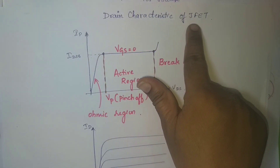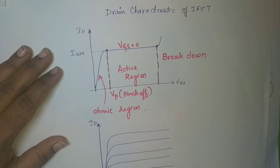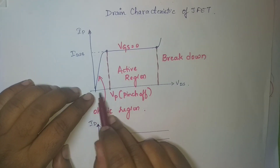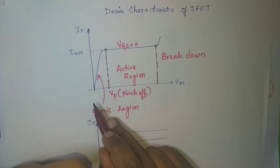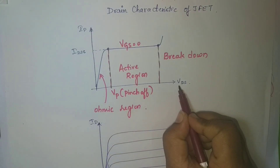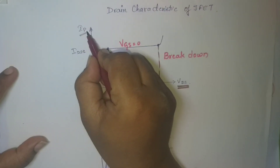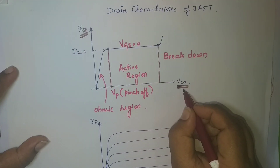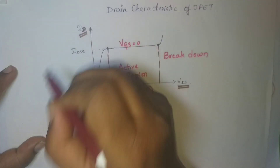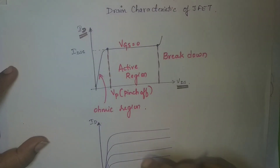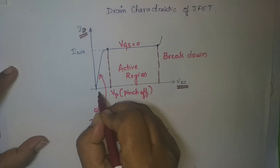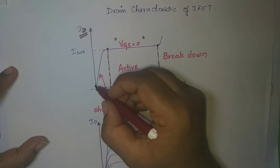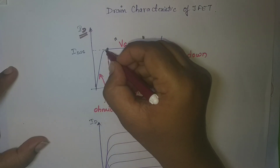The next topic is drain characteristic of JFET — how it looks and what its parameters are. You have two axes: the x-axis shows voltage VDS, and the y-axis shows current ID. We vary VDS and plot the corresponding values of ID. As I increase VDS while keeping VGS equal to 0, the current varies linearly initially.